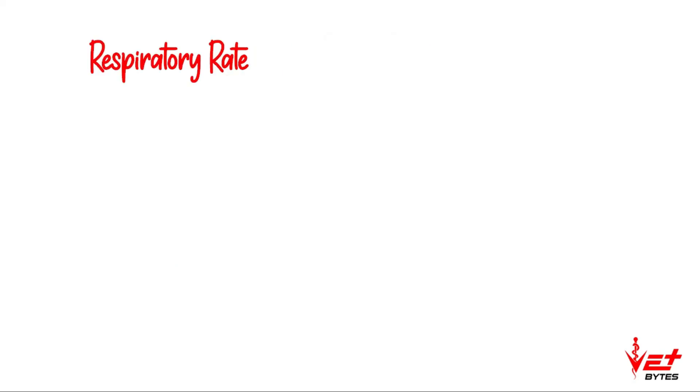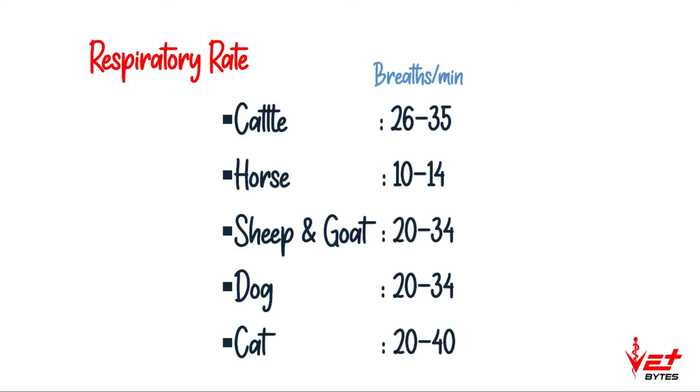Respiratory rate, which is number of breaths per minute for different species of animals, are: cattle 26 to 35 per minute, horse 10 to 14 per minute, sheep and goat 20 to 34 per minute, dog 20 to 34 per minute, cat 20 to 40 per minute.